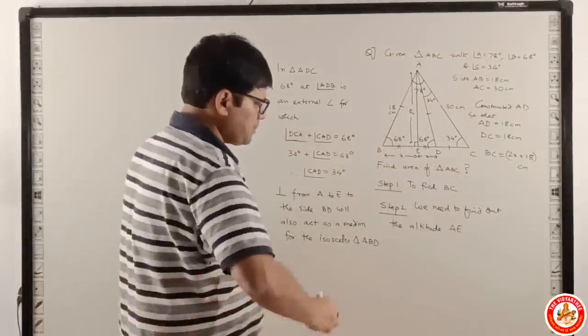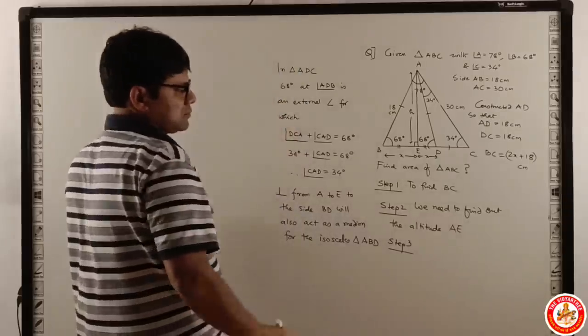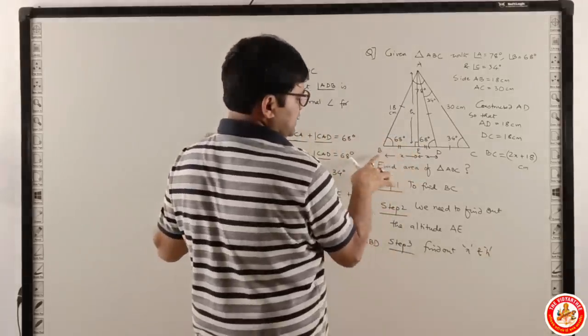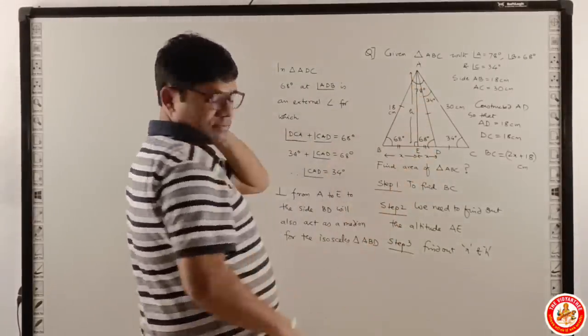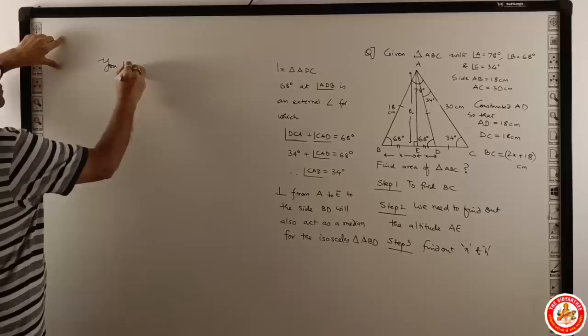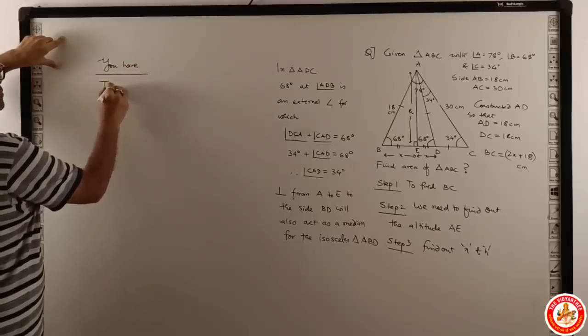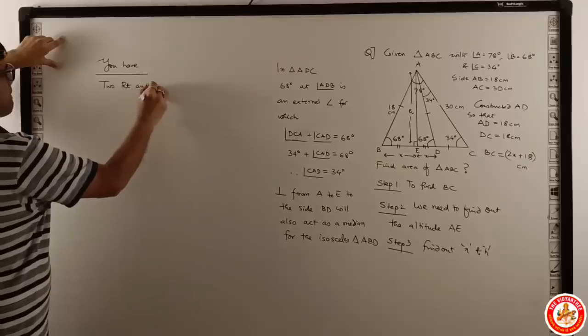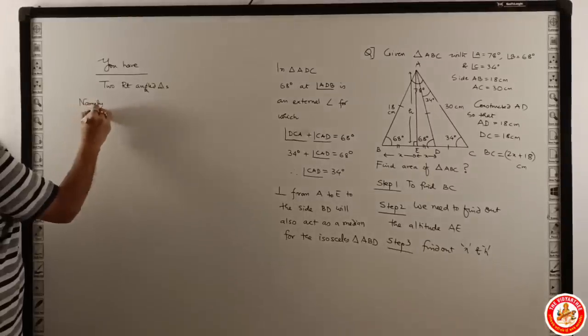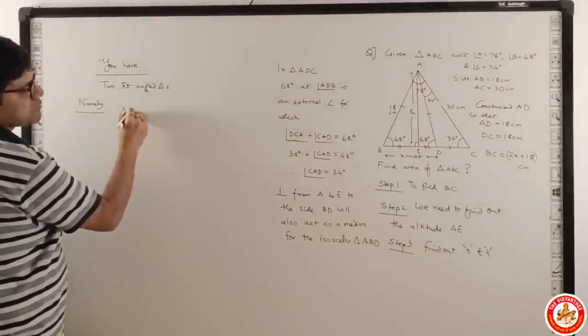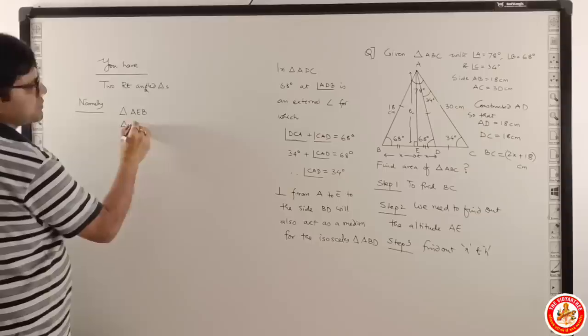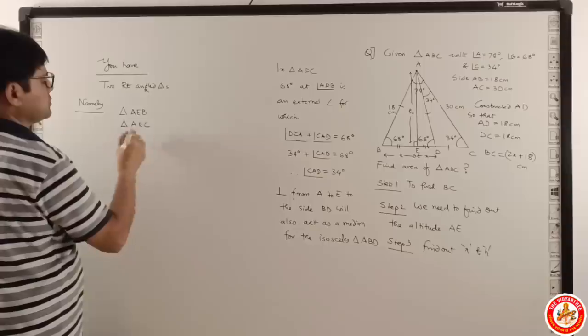Our step 3 will be to find out x and h, where x is part of the length measuring from B to E or E to D, and h is the altitude of the triangle. You have two right-angled triangles, triangle AED and triangle AEC.